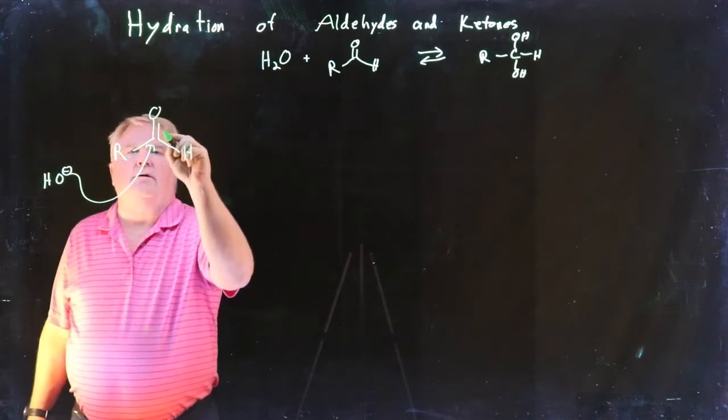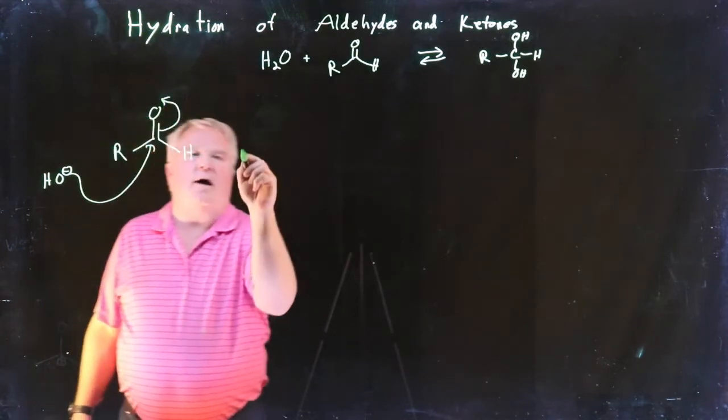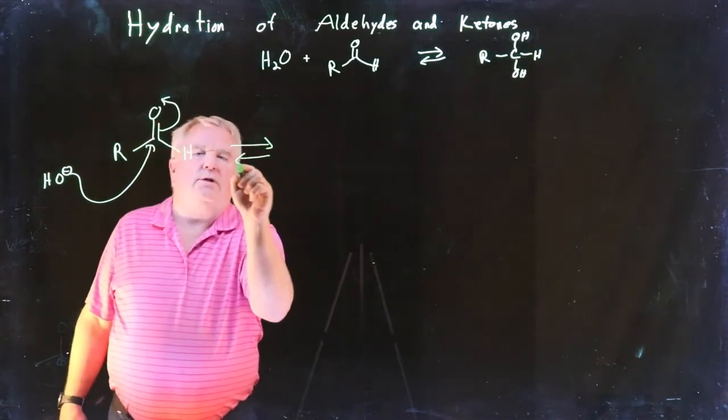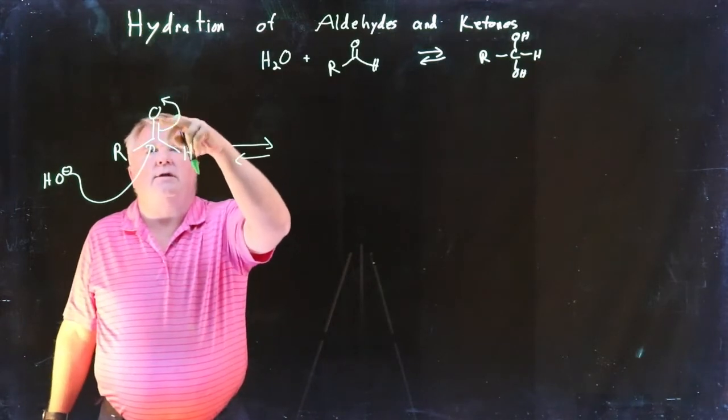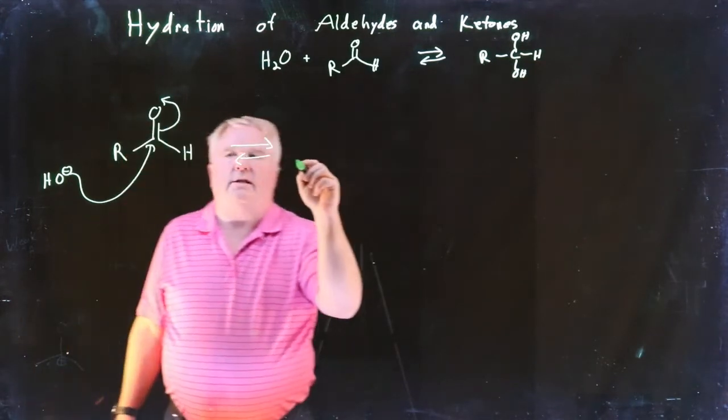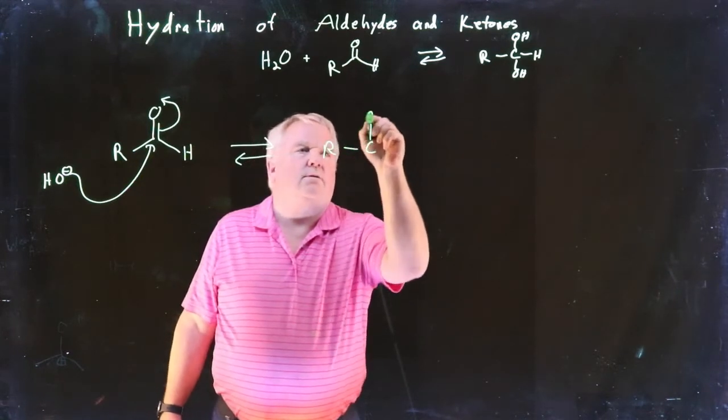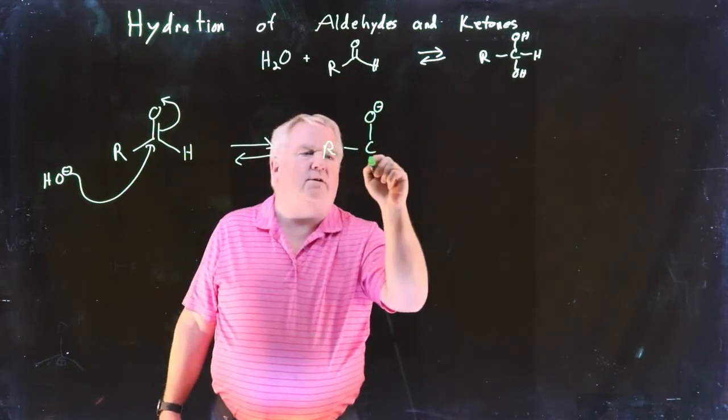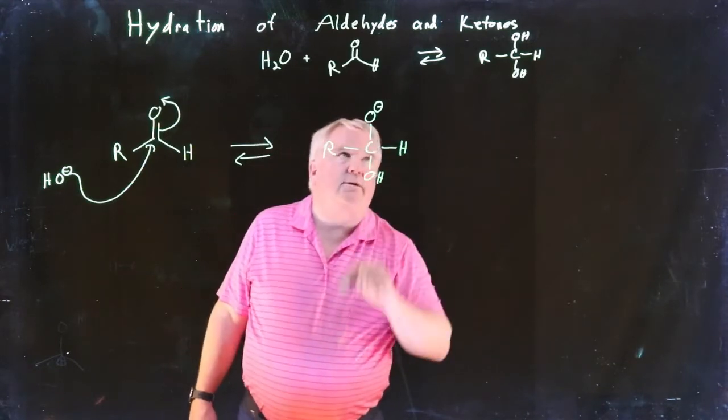We'll attack the carbonyl carbon. We promote our pi electrons onto the oxygen. We formed a bond between that oxygen and that carbon and we broke a bond between this carbon and this oxygen and promoted the electrons up top. So our species is now a negatively charged alkoxide with an OH bonded to it and it was an aldehyde.